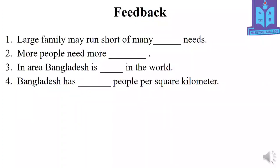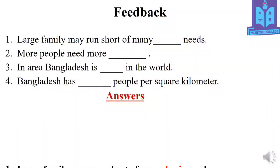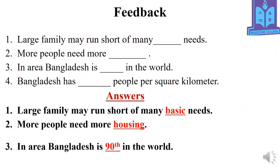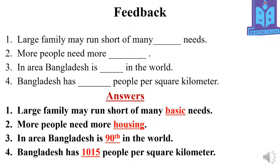Number 3: In area, Bangladesh is BLANK in the world. The answer is 90th in the world. Number 4: Bangladesh has BLANK people per square kilometer. The answer is 1,015 people per square kilometer. Let's match your answers: Number 1 — basic needs; Number 2 — housing; Number 3 — 90th in the world; Number 4 — 1,015 people per square kilometer.